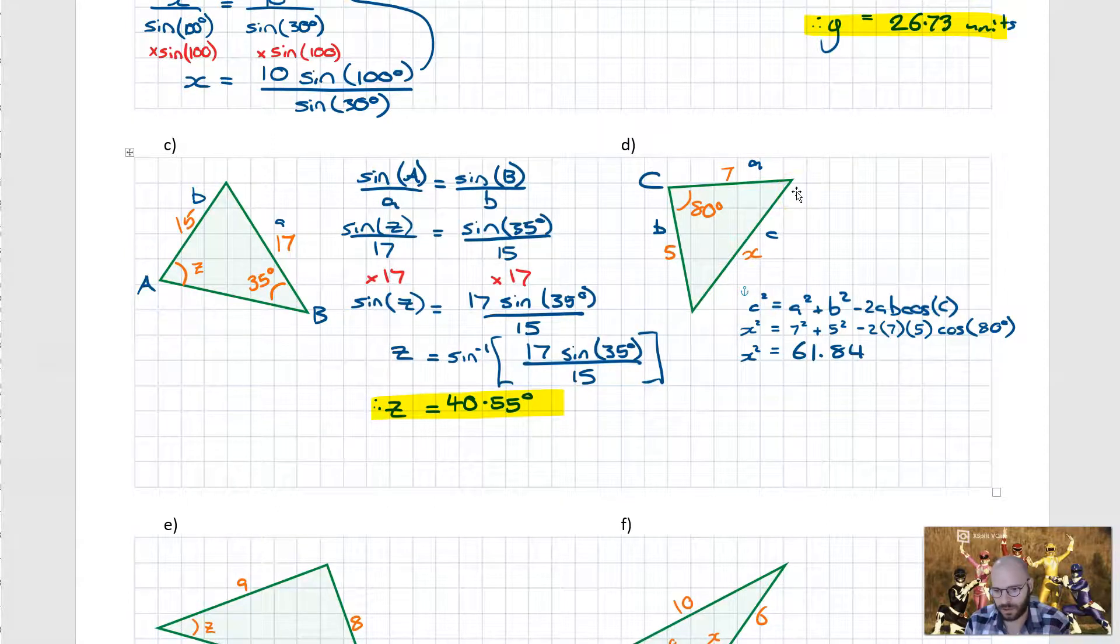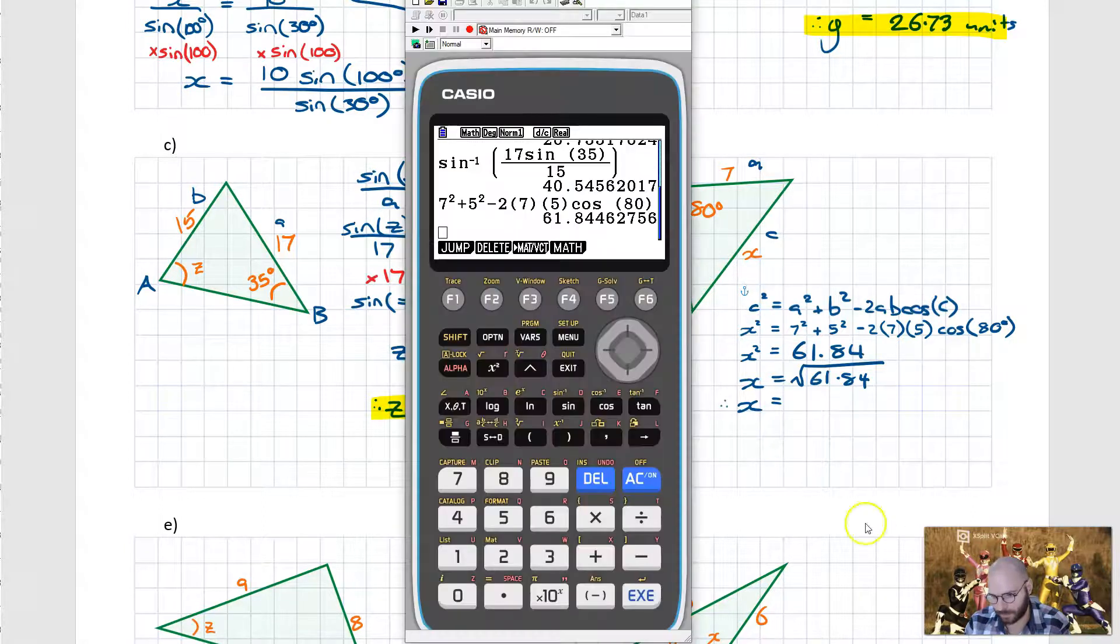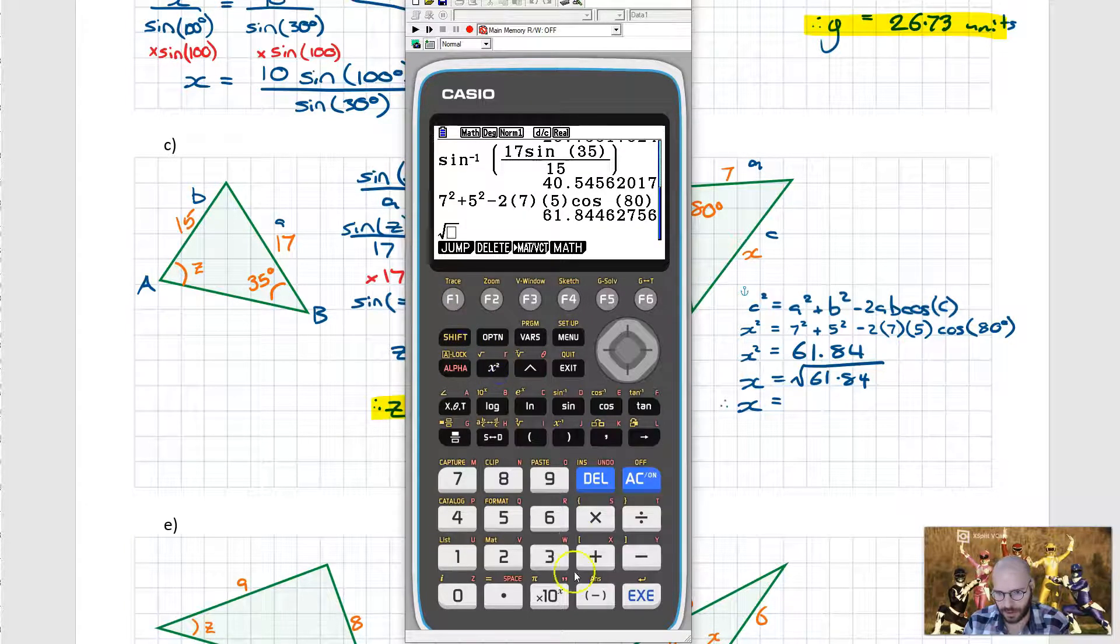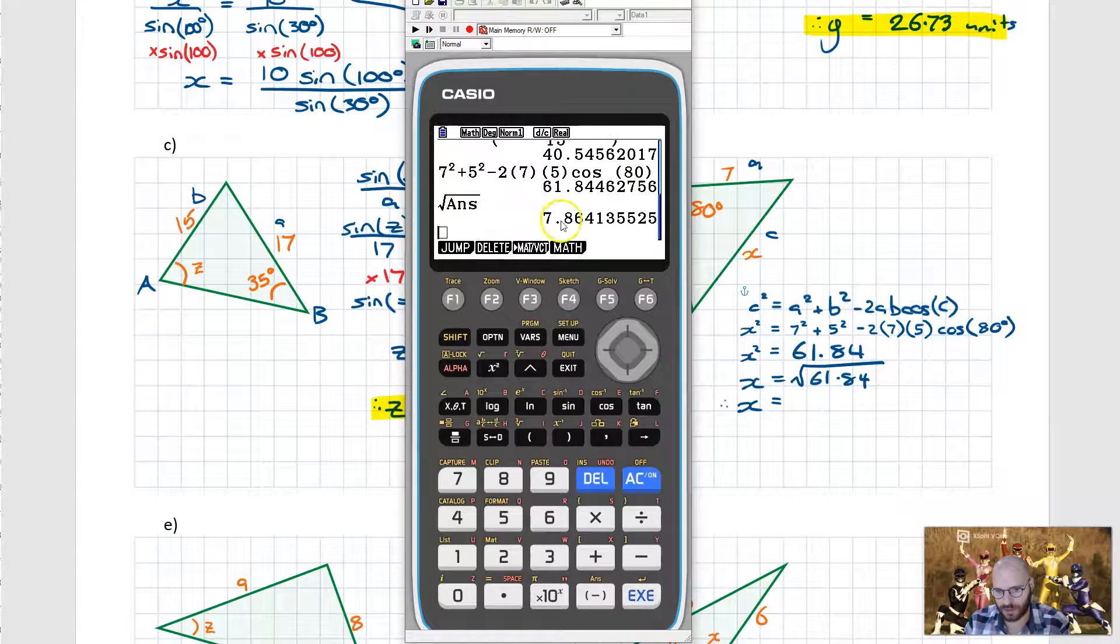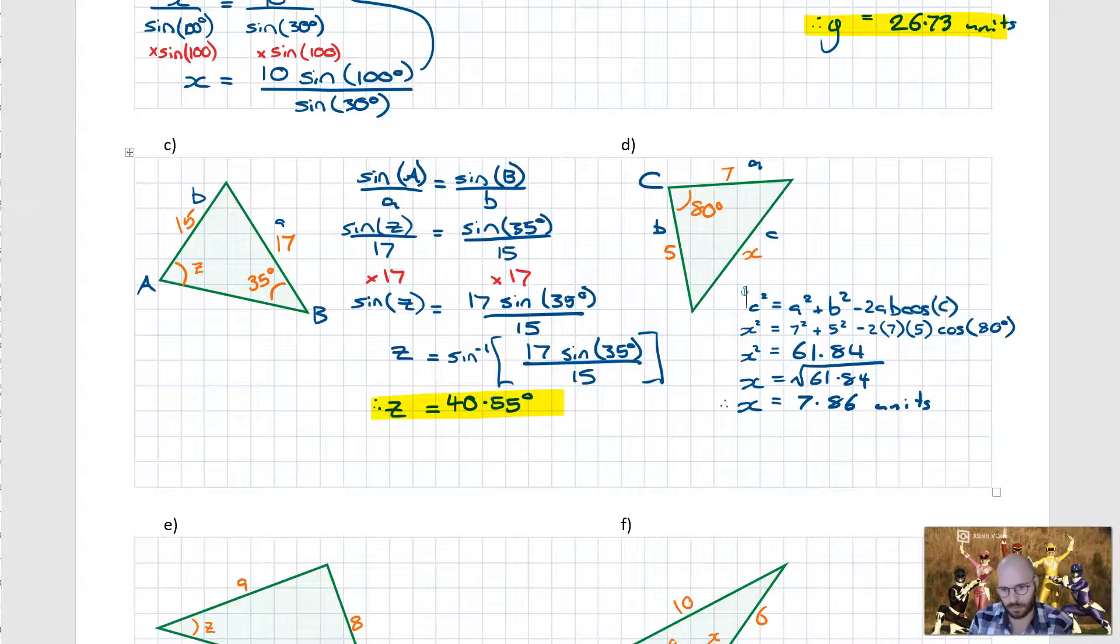Now here's where we need to contain our excitement in that we're not done yet because this is X squared. What we actually want to do is calculate the value of X as opposed to X squared. So we take the square root of 61.84 and then we take the square root on our calculator. So we're going to go shift square root and then we go shift answer. What this will do is it will grab this value over here and stick it down. So we're still getting that as close to exact as we possibly can. So it's going to come out to be 7.86.